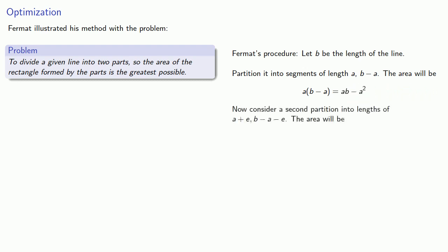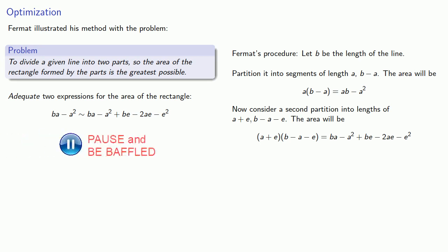Now consider a second partition into lengths of a plus e and b minus a minus e. The area will be... At this point Fermat does something that has caused a lot of debate among historians of mathematics. He pulls a term from Diophantus and says adequate the two expressions for the area of the rectangle. Now if we treat this squiggle as an equals, these two expressions can be simplified. And we can divide by e to get...